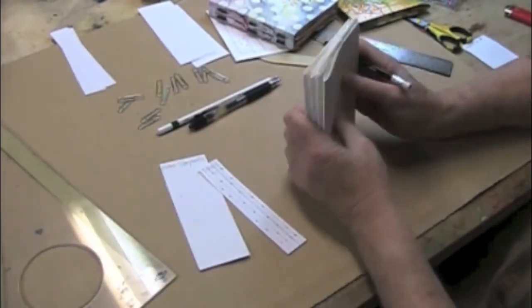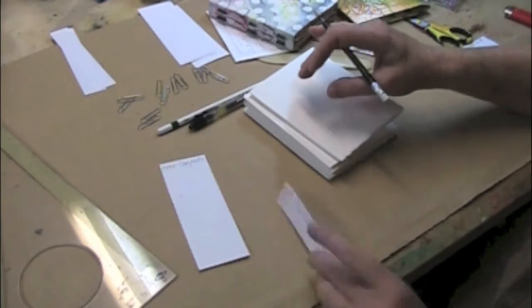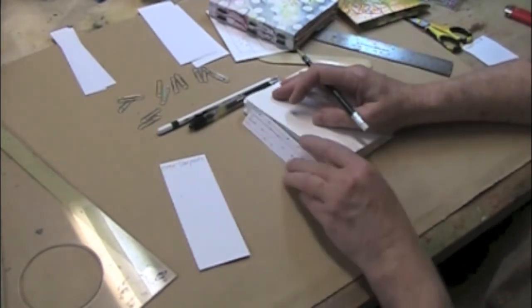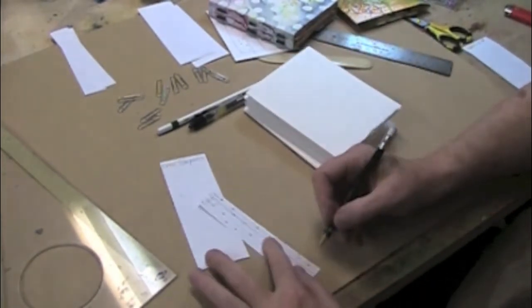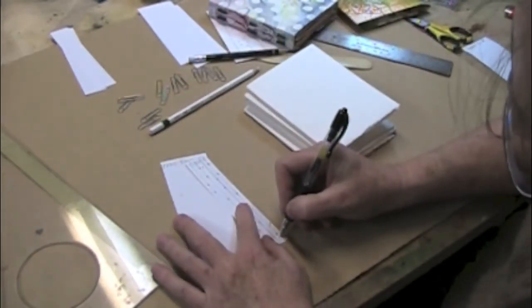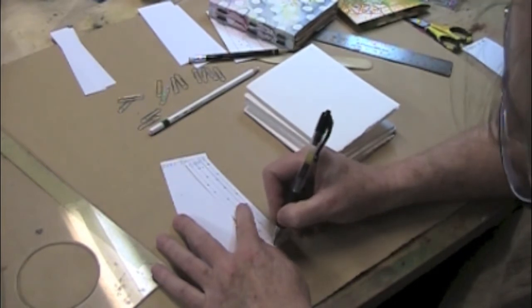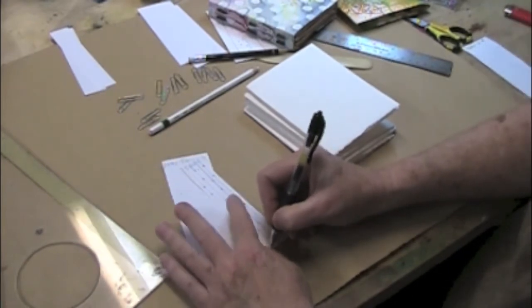Okay, so we have, the spine is going to go like that, so we're going to go ahead and mark this with a pen so you differentiate. One, two, three, four.